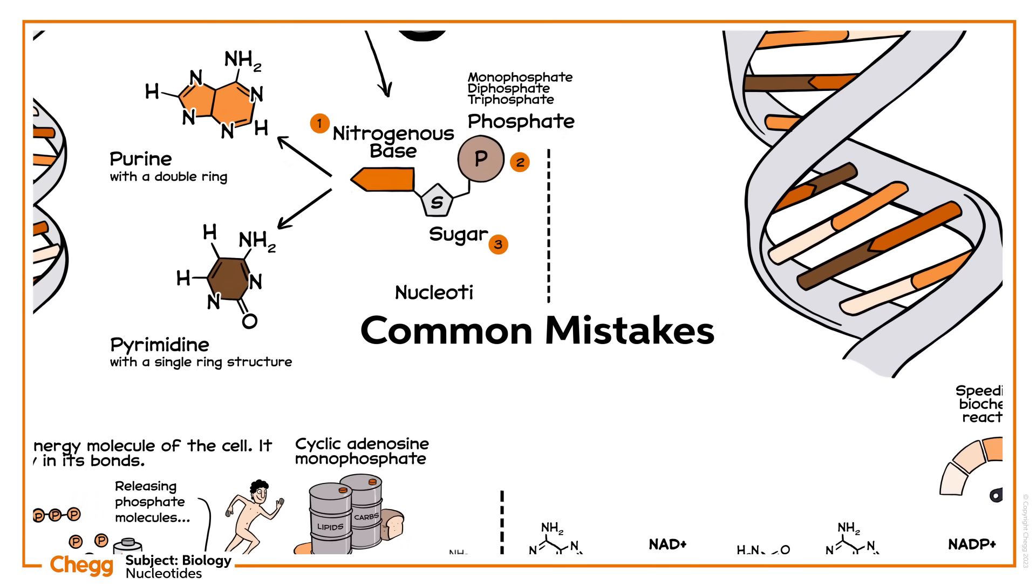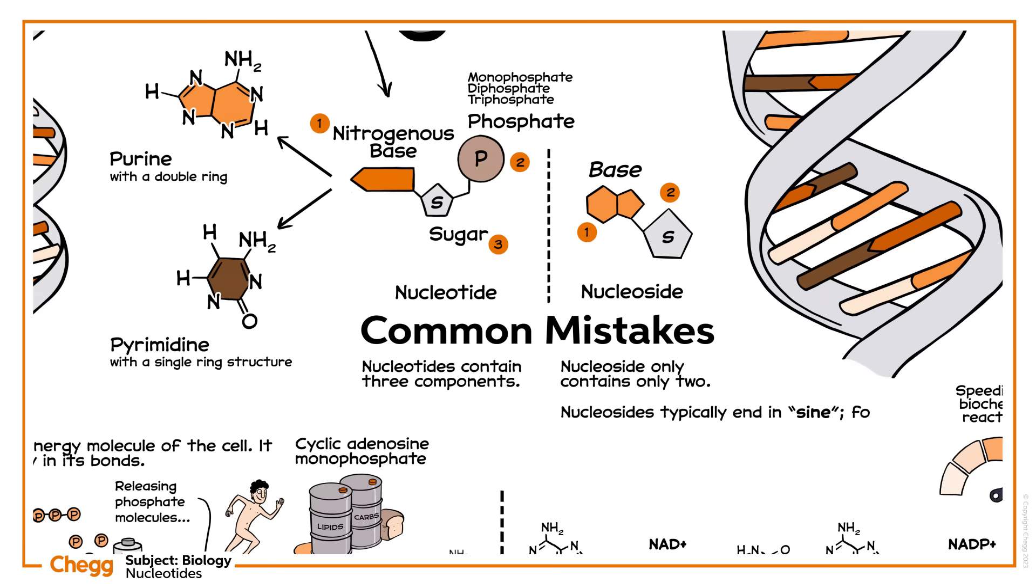Don't get nucleotides confused with nucleosides. While nucleotides contain three components—sugar, phosphate, and base—a nucleoside contains only two, a sugar and a base. A nucleotide is a nucleoside with a phosphate group. Nucleosides typically end in -sine. For example, adenosine is the name of the nucleoside containing adenine.